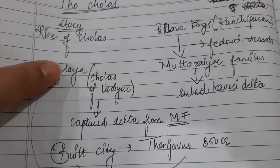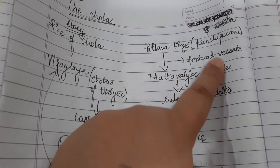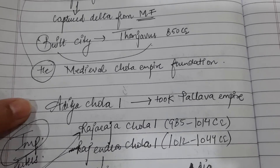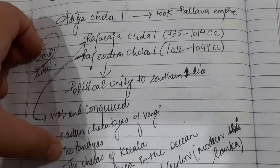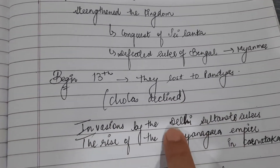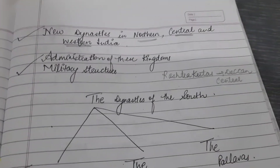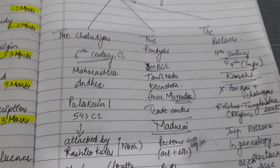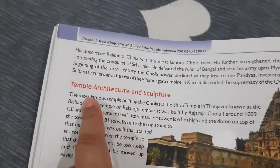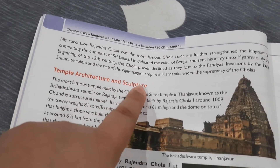To recap the story: Vidyalaya captured the Kaveri delta from the feudal vassals of the Pallava king, built the city of Tanjavur, and laid the foundation of the medieval Chola period. Aditya Chola came and took the Pallava empire, followed by the two important rulers Raja Raja Chola and Rajendra Chola who expanded the empire further. I would request you to refer to page numbers 25 and 26 in your notes. In the next video, we will be studying temple architecture and sculptures.